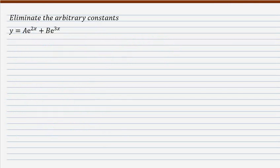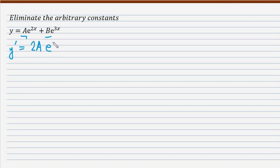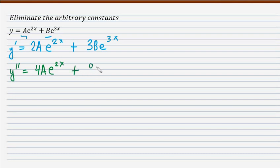Moving to the next problem: y is equal to a e raised to 2x plus b e raised to 3x. Again we have two arbitrary constants a and b. The first derivative y prime is equal to 2a e raised to 2x plus 3b e raised to 3x. The second derivative y double prime is equal to 4a e raised to 2x plus 9b e raised to 3x.